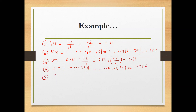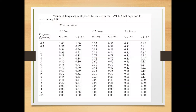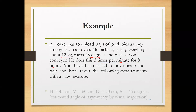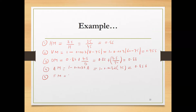The fifth multiplier is FM, the frequency multiplier, which we find from a table. The lift frequency is 3 lifts per minute, the task is performed for 8 hours, and V is 60 cm which is less than 75. So the frequency multiplier FM is 0.55. Based on observation, gripping of the tray is easy, so coupling multiplier CM equals 1.0.